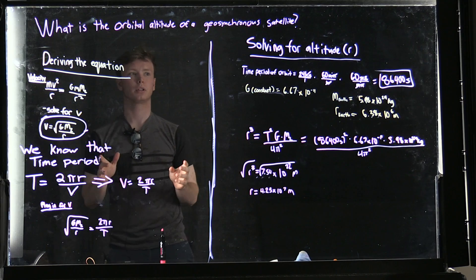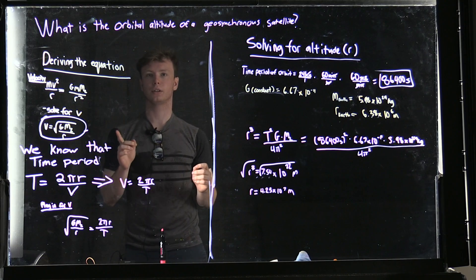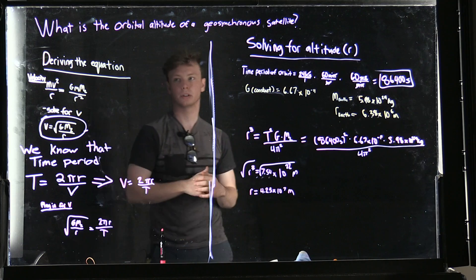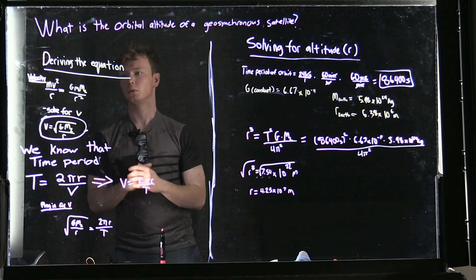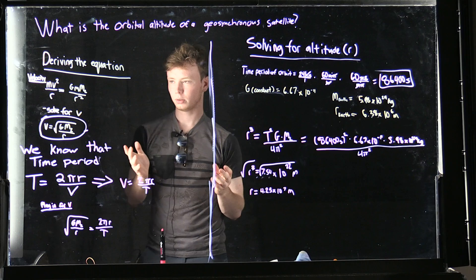Okay, so our question that we're solving today is what is the orbital altitude of a geosynchronous satellite? Our first step here, we're going to derive the equations we need to use.